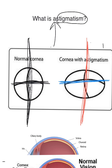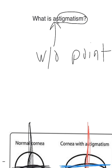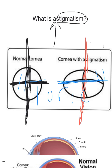To treat astigmatism, you need either glasses, contacts, or laser surgery. Glasses are not a big deal — they just make the lenses a different shape. For contacts, you have to buy what's called a toric contact, which is just a little more expensive. Or you can get laser surgery, where they use a laser to ablate and reshape the cornea to make it more of a spherical shape.